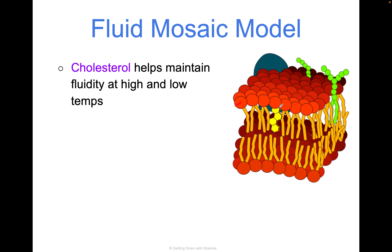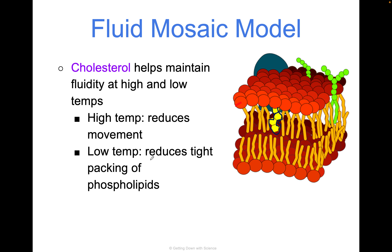Cholesterol is really important in this model. It helps maintain fluidity at both high and low temperatures. It's a fat inside our membranes that resists high temperatures — it kind of absorbs them — and at low temperatures, it reduces tight packing of phospholipids. You may have heard cholesterol in a negative sense regarding high or low cholesterol in your blood, but cholesterol is actually incredibly important in the fluid mosaic model.